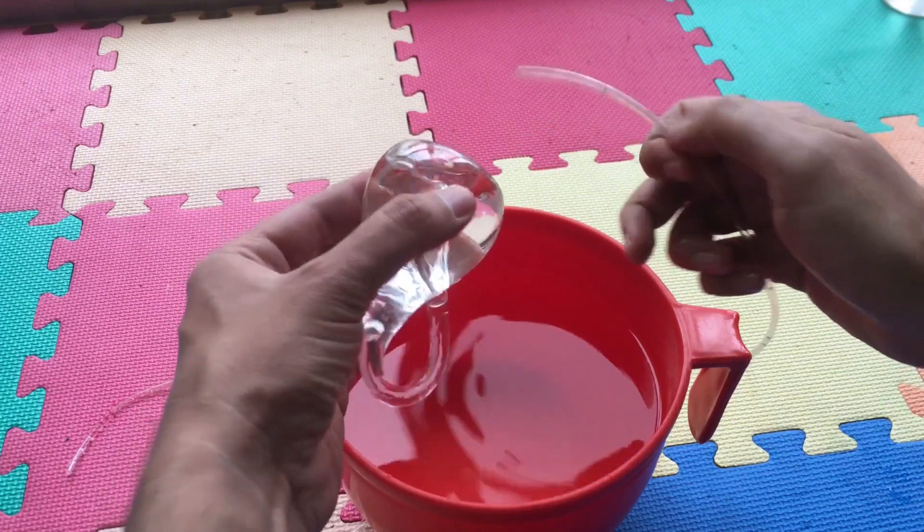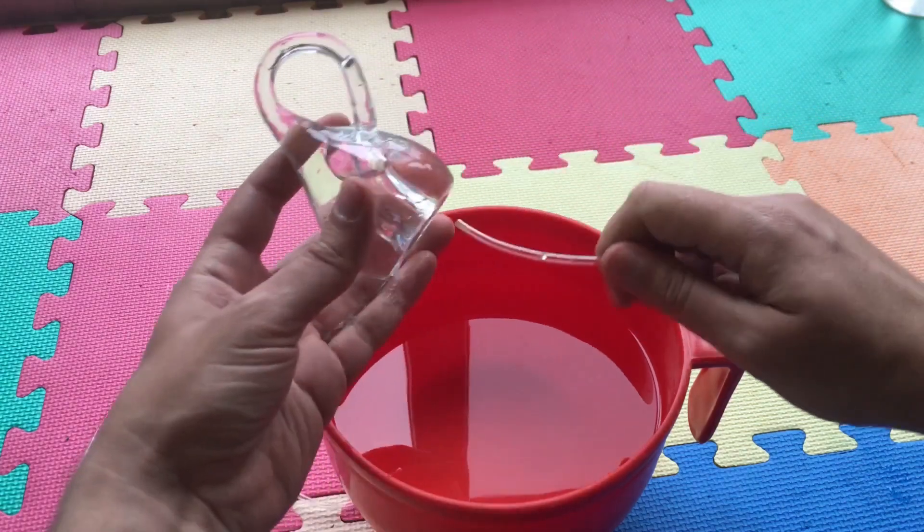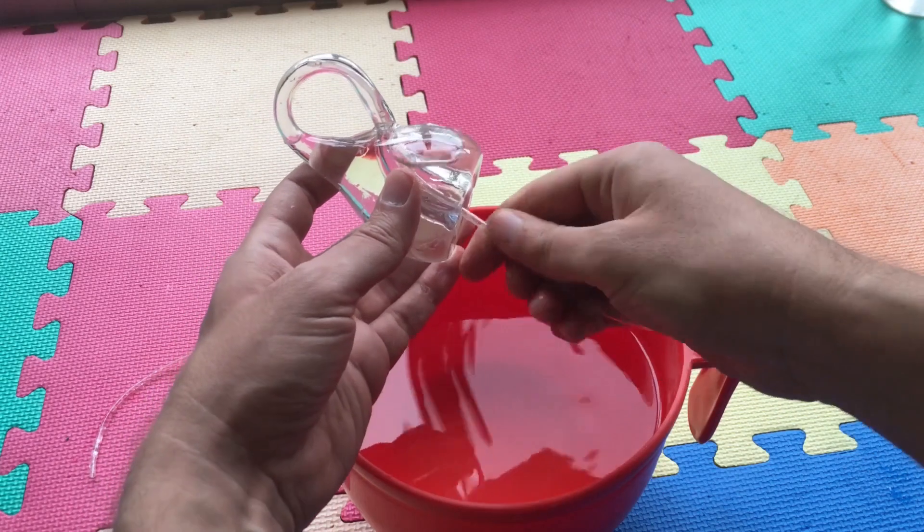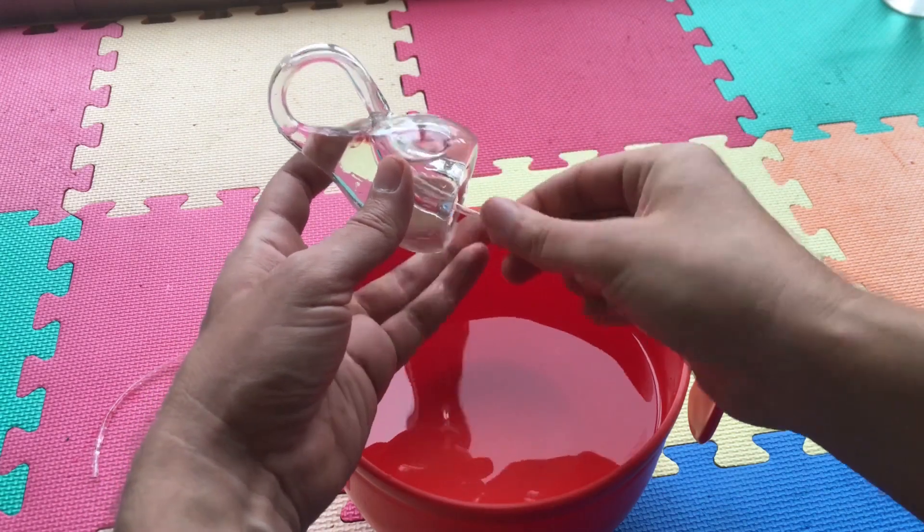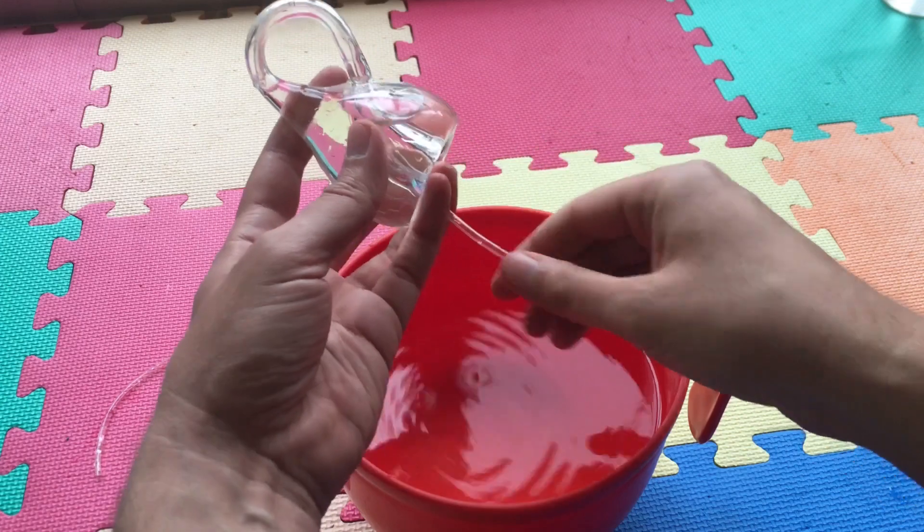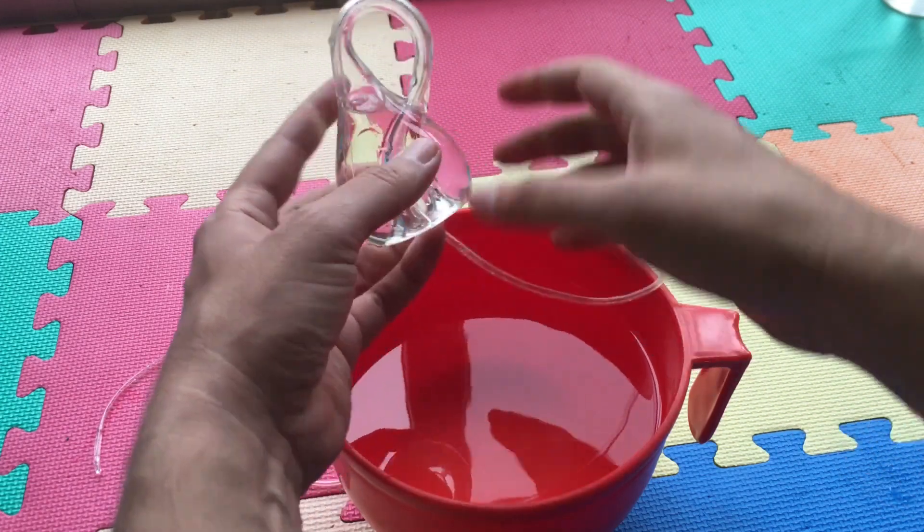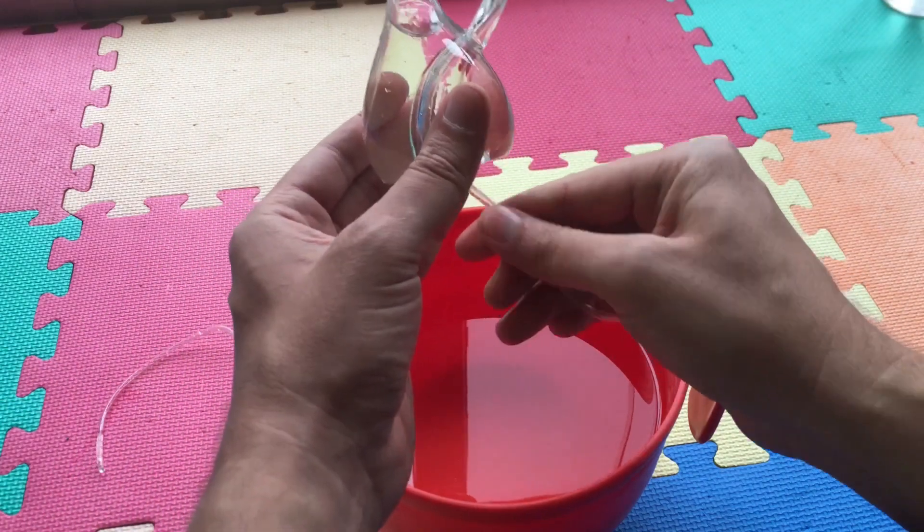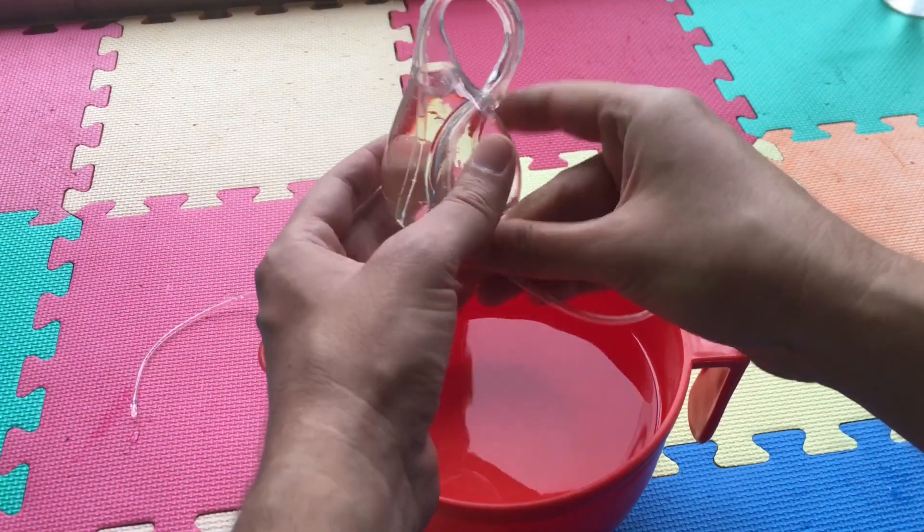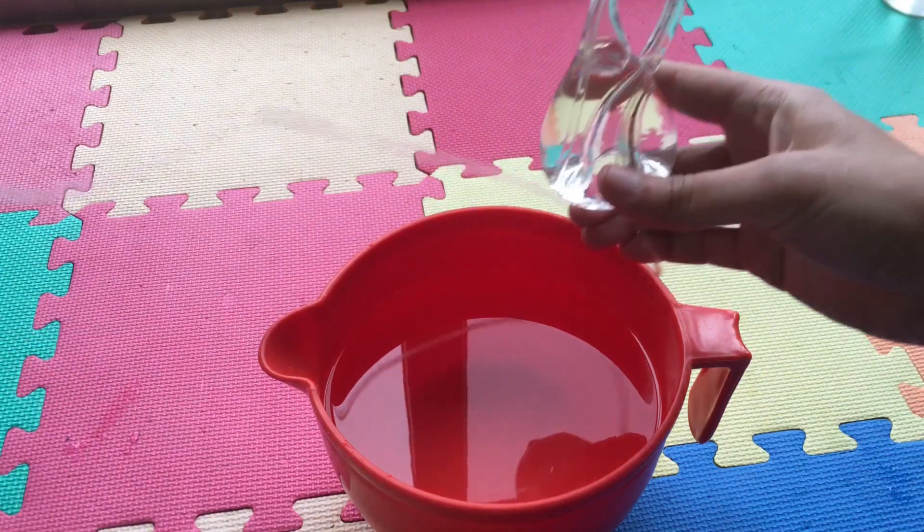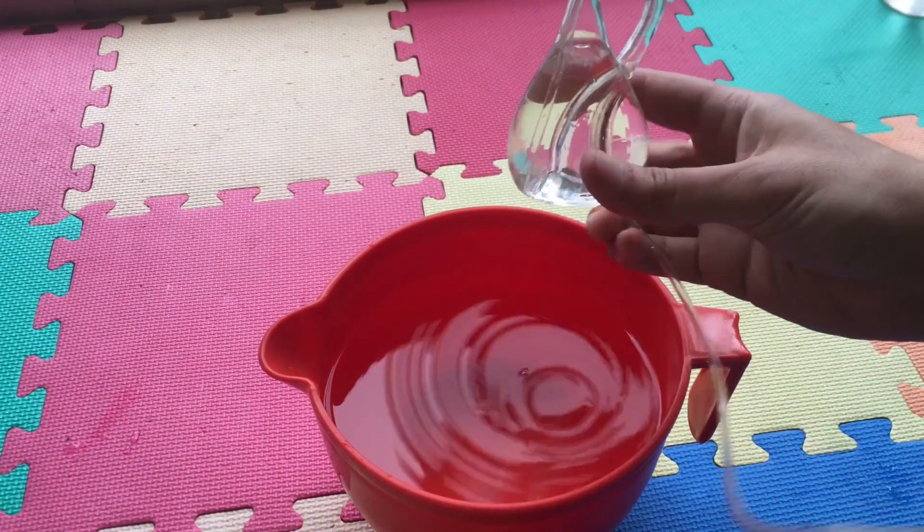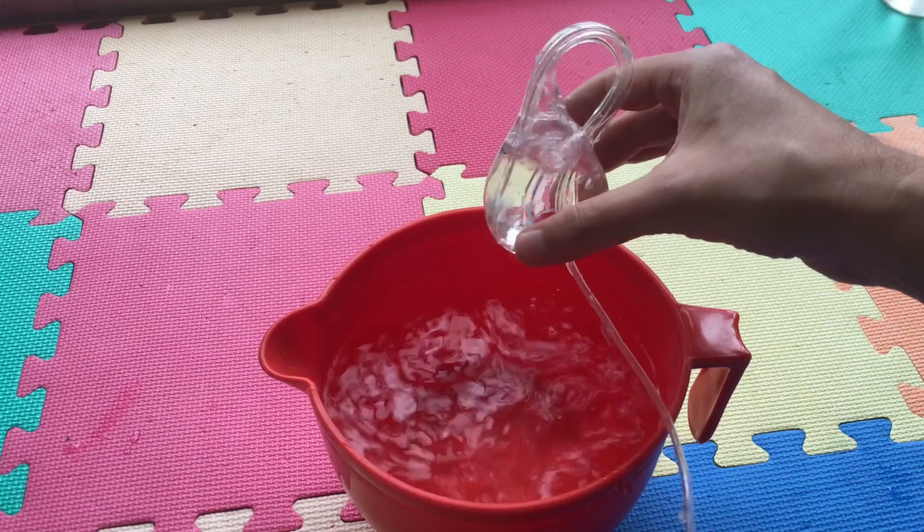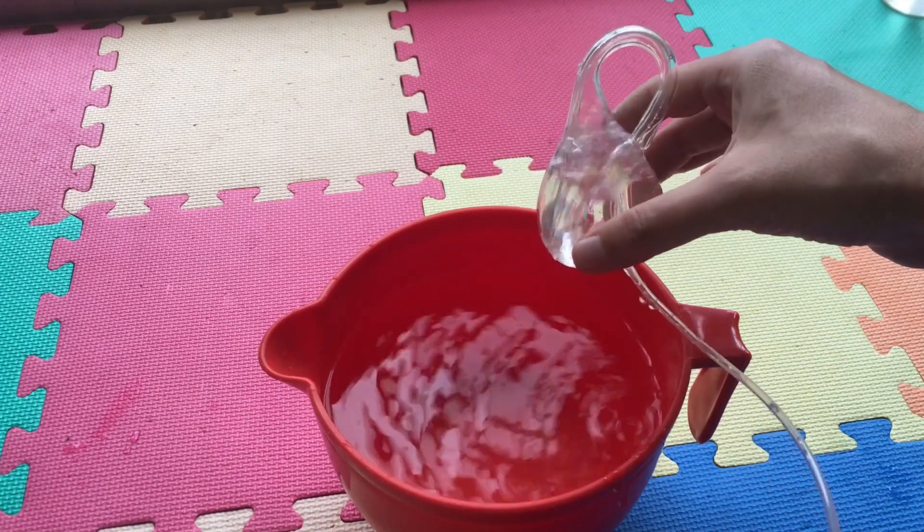Again, we put the tube inside and we're going to blow air so the air will push out the water. Could be done with a pump or you can just blow it. In this case I will blow air. The air will increase the pressure inside and the water gets out.